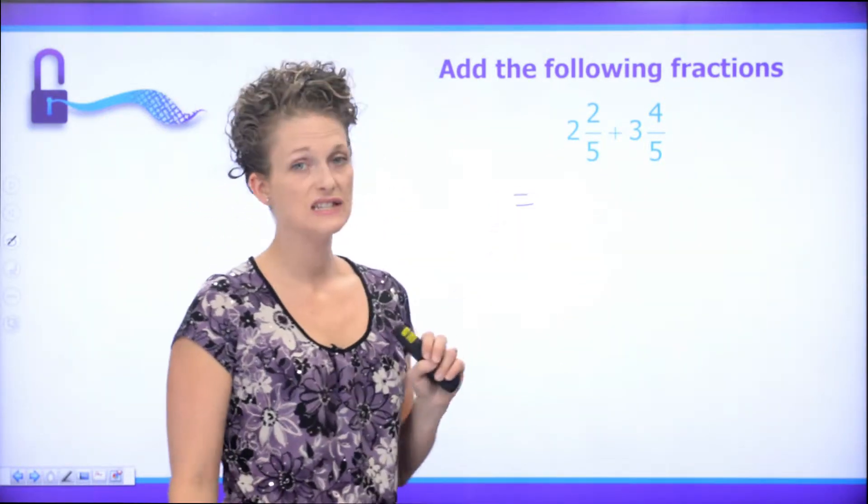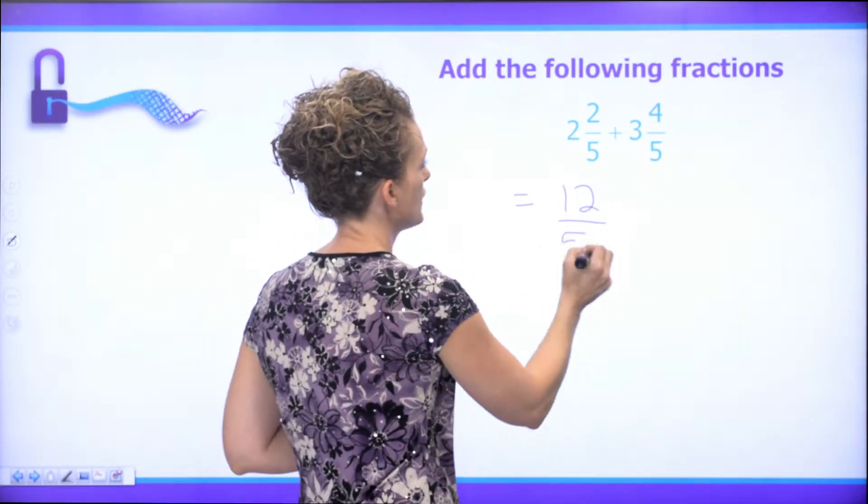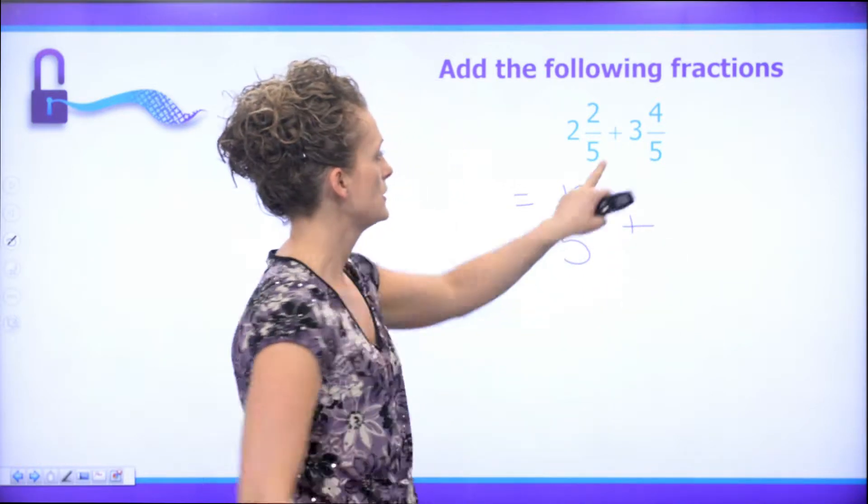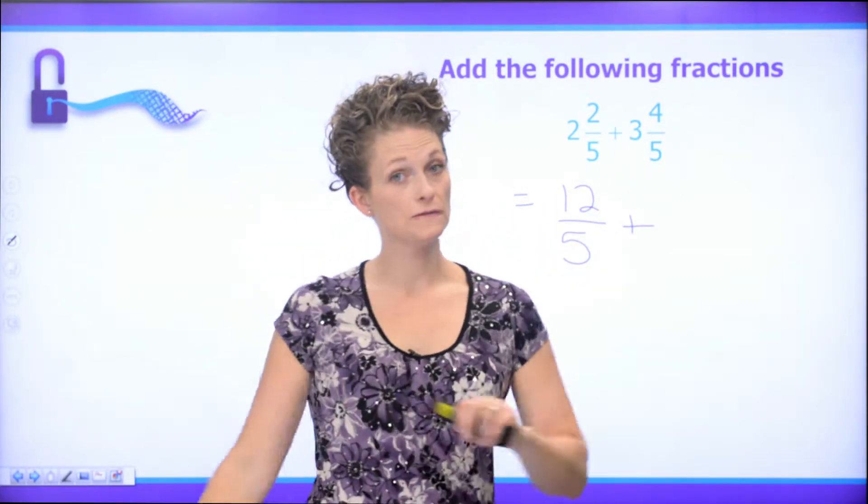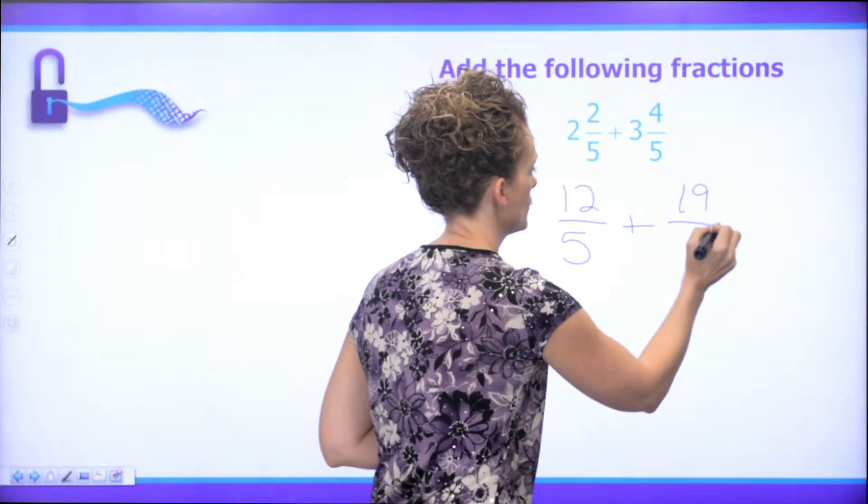Alright, so 2 times 5 is 10 plus 2 is 12. So, 12 over 5 plus 3 times 5 is 15 plus 4 is 19 over 5.